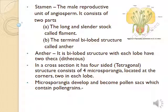The stamen is the male reproductive part of a flower. It has two parts: the filament and the anther. The filament is a long, slender structure. At the tip of the filament is a bilobed structure called the anther, which consists of pollen grains that produce male gametes.